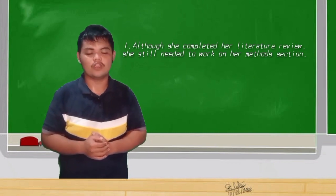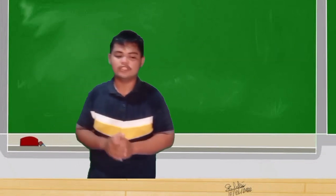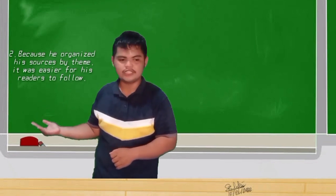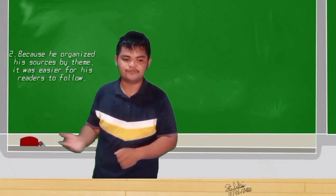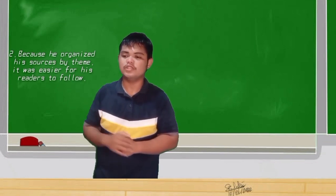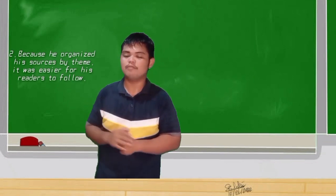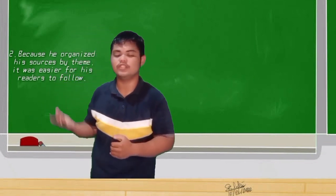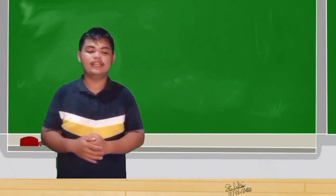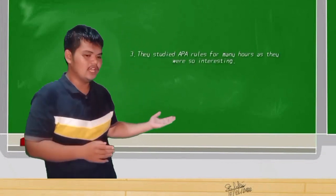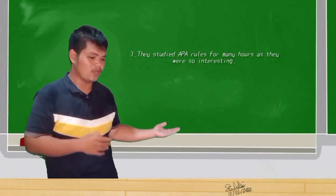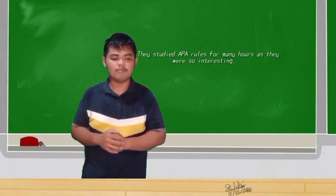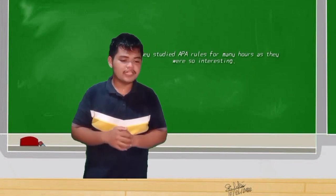Another example: 'Because he organized his sources early, it was easier for his readers to follow.' This sentence also begins with a dependent clause — note the comma before the independent clause 'it was easier for his readers to follow.' A third example: 'They studied EPA roots for many years as they were so interesting.' Note that there is no comma in this sentence because it begins with an independent clause.